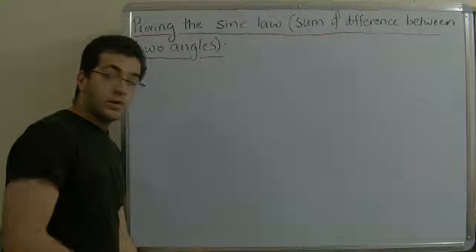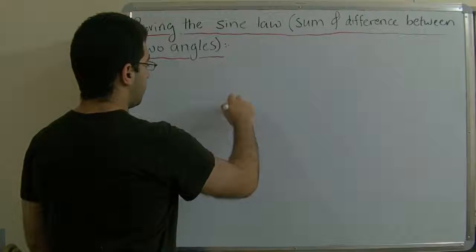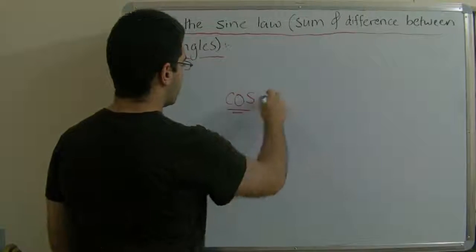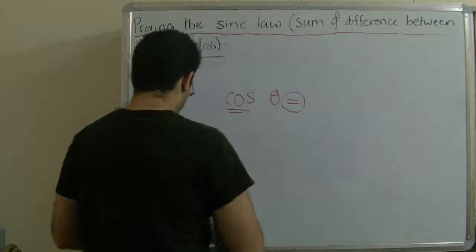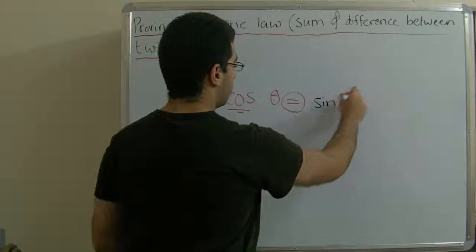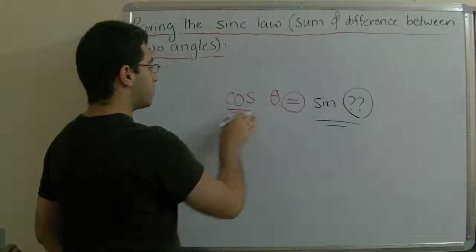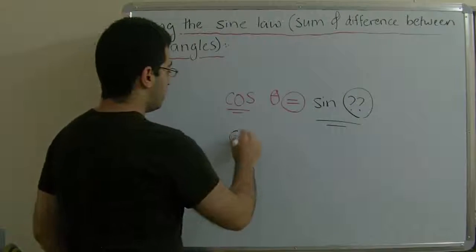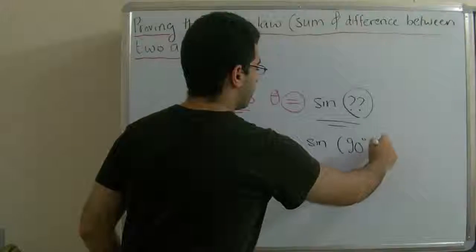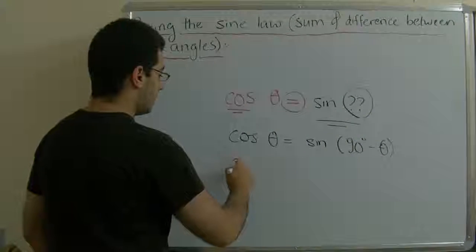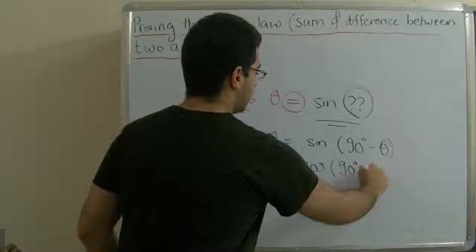Before anything, there is a concept that we must show. If we have a certain angle, cosine theta, and we want to get the sine of a certain angle — what angle's sine equals cosine theta? We have a rule that says cosine theta equals sine of 90 degrees minus theta. And the opposite: sine theta equals cosine of 90 degrees minus theta.